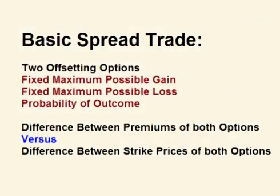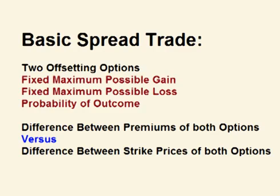The bear call spread is one of the basic spread trades. The concept of the basic spread trade is using two offsetting options such that the potential profit and potential loss from both have fixed maximum amounts, based on the difference between the premium for both options that is either collected or paid up front, and the difference between the two strike prices.